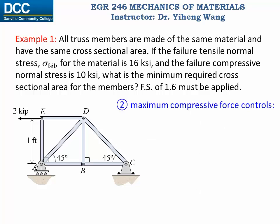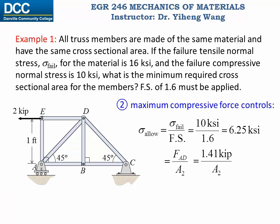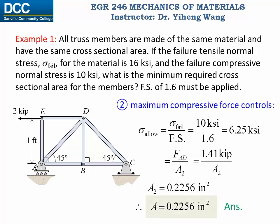Similarly, for situation two, if the maximum compressive force controls, the allowable compressive stress is calculated from the failure compressive stress: 10 divided by 1.6, which equals 6.25 ksi. Then setting this equal to force over cross-sectional area A2, we calculate A2 to be 0.2256 square inch. Comparing this to the previous result of 0.2 square inch, for safety reasons we should choose the larger area. Therefore, the final answer is 0.2256 square inch for the cross-sectional area of each truss member.